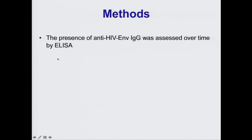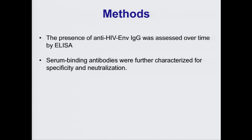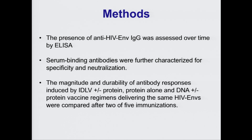The presence of anti-HIV envelope IgG was assessed over time by ELISA. Serum-binding antibodies were further characterized for specificity and neutralization, and the magnitude and durability of antibody responses induced by IDLV plus or minus protein, protein alone, and DNA plus or minus protein vaccine regimens delivering the same HIV envelope were compared after two of the five immunizations.